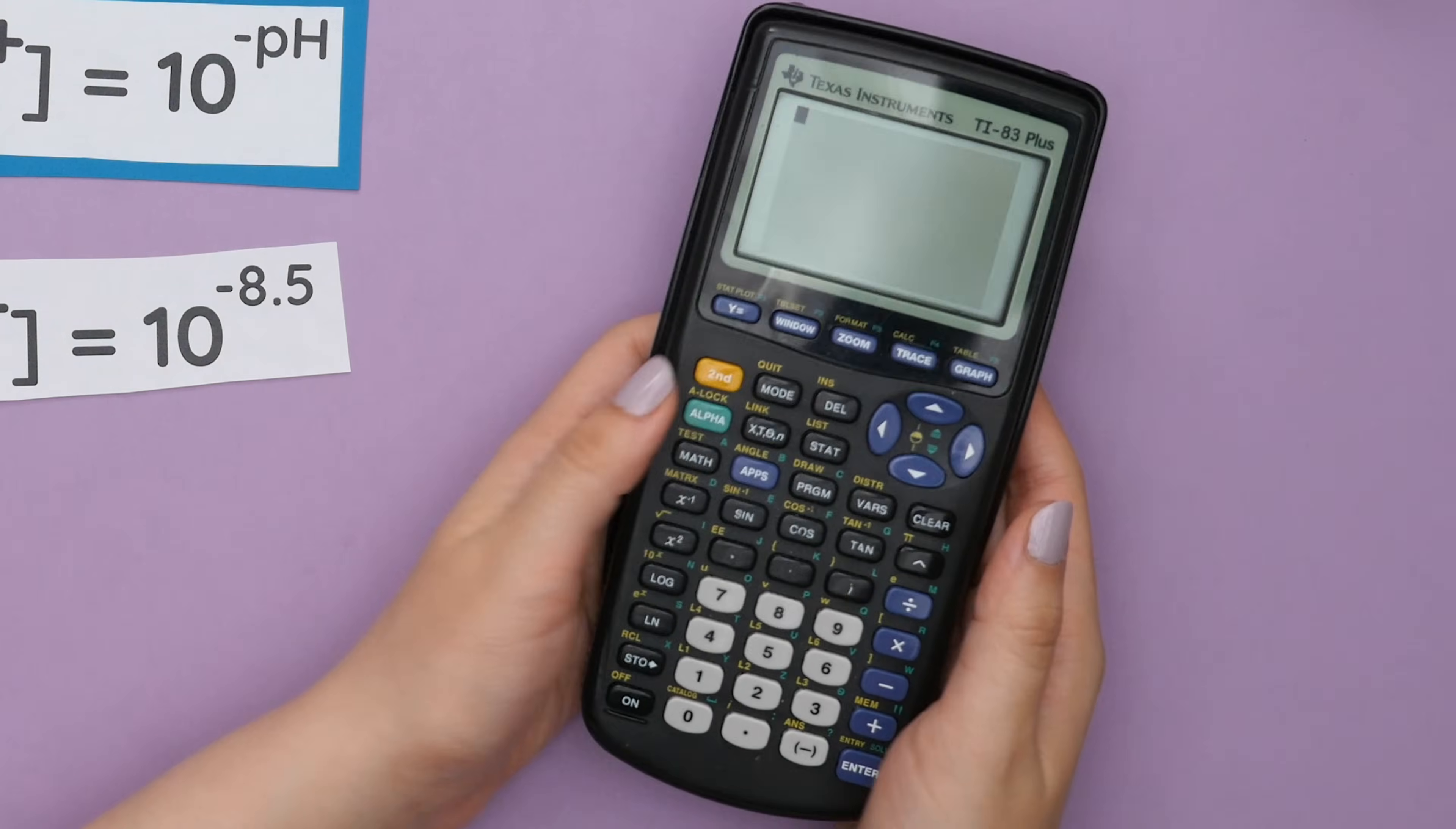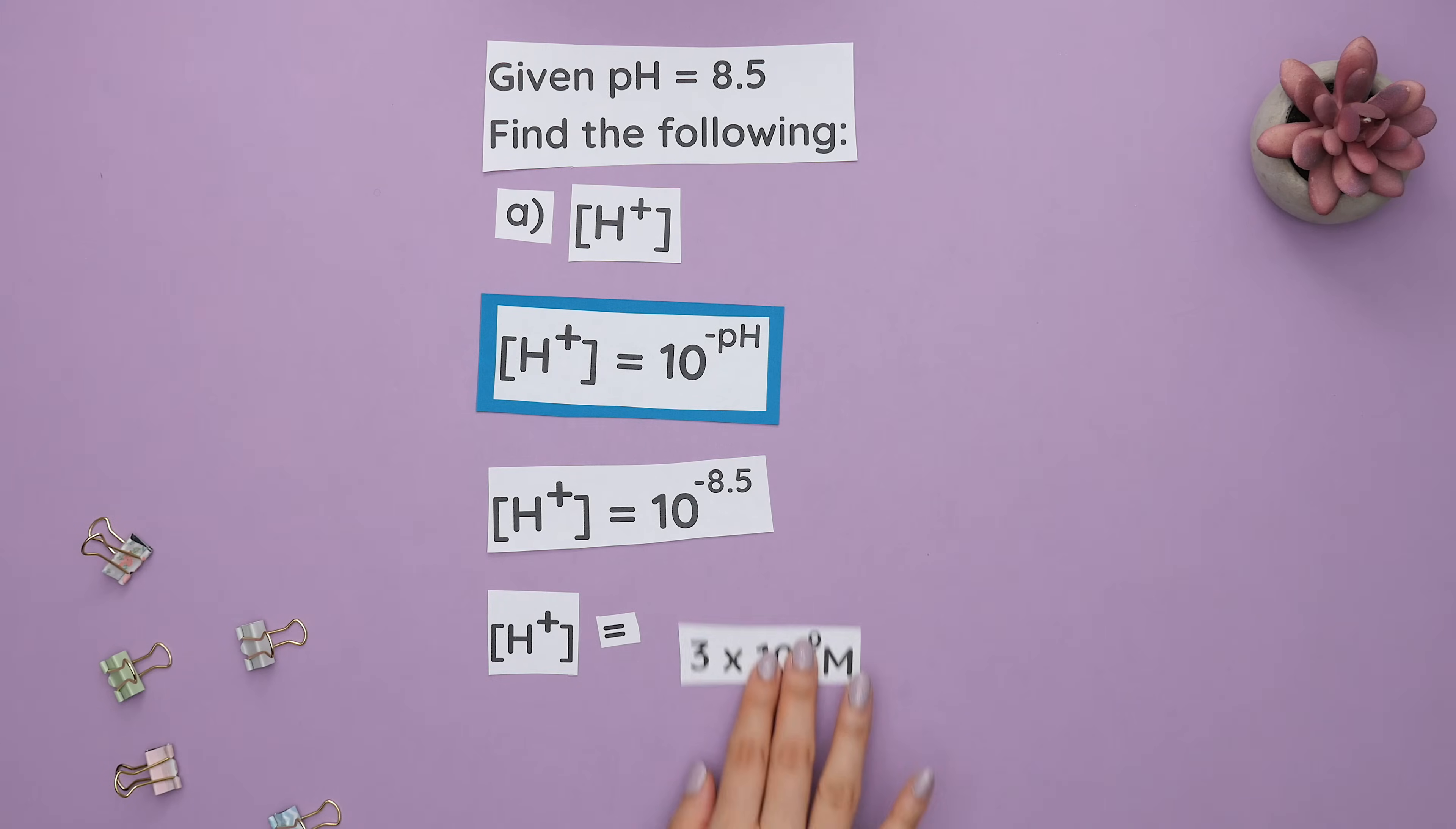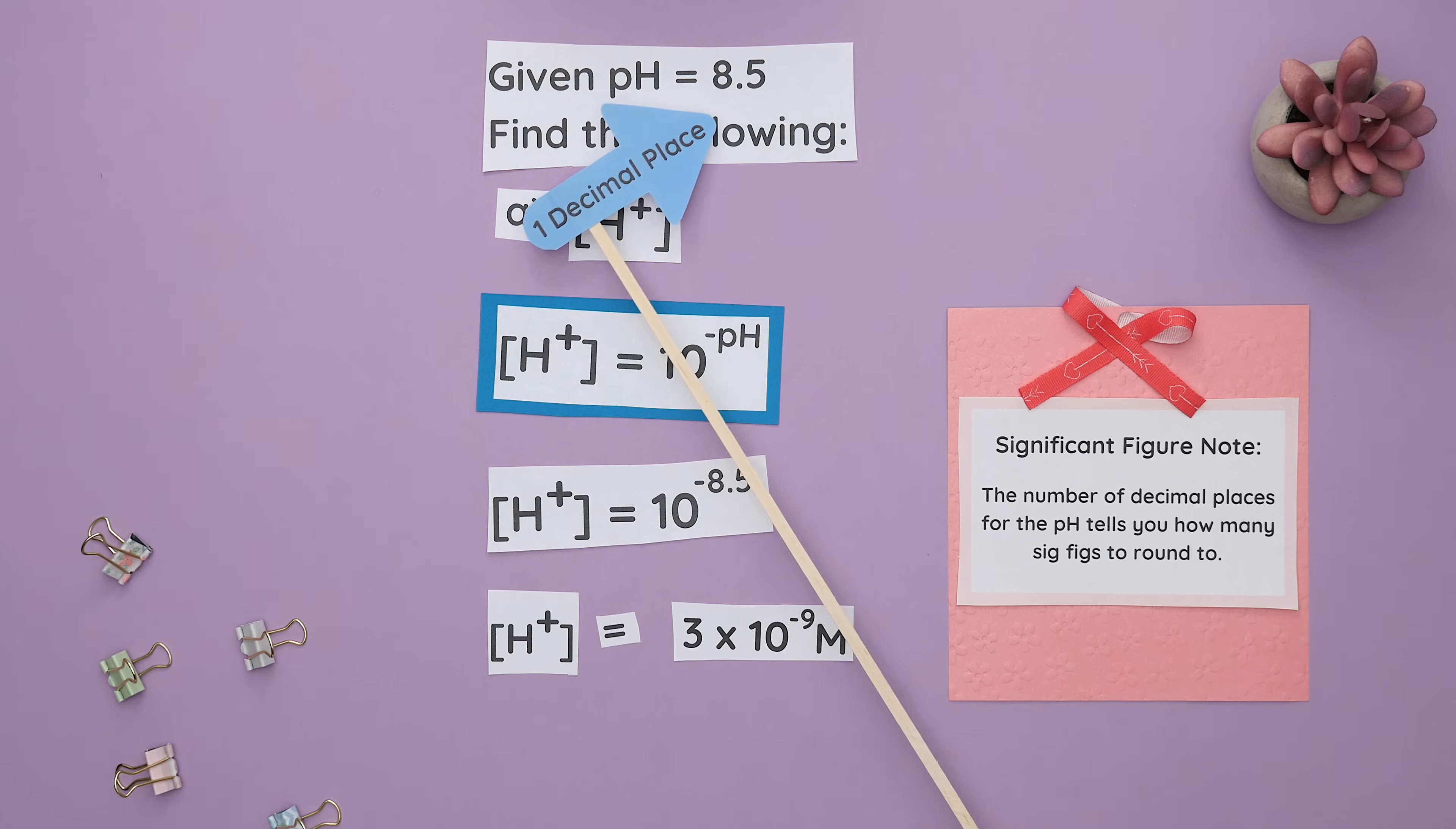So press second log on your calculator, then input the exponent of negative 8.5 and we get this as our acid concentration. Significant figure note! When we're going from pH to acid concentration, the number of decimal places for the pH tells you how many sig figs to round to. This is why our acid concentration only has one sig fig.